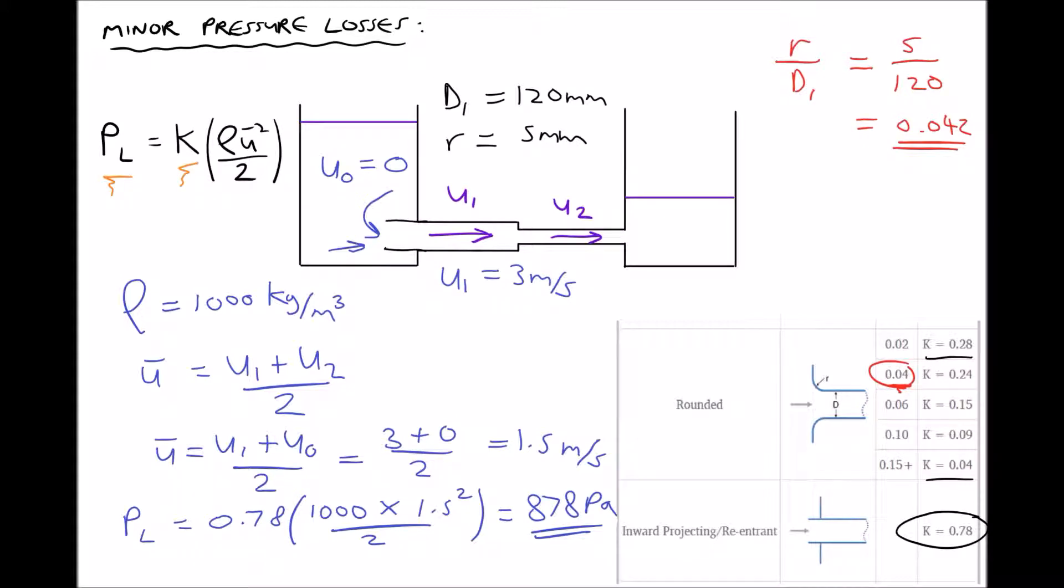So returning to our pressure loss formula, we have pressure loss equals K, 0.24, times ρ ū bar squared over 2. Well we've already said ρ is a thousand, our value of average velocity is unchanged so it's still 1.5 squared over 2, giving us a pressure loss this time equal to 270 pascals. So once again we have a relatively small pressure loss.